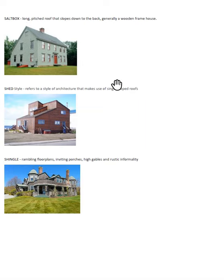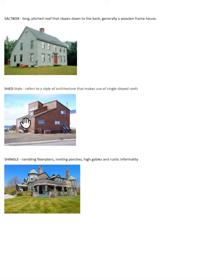Shed style homes — believe it or not, this is a shed style home. Notice how each roof only has one slant. See how this roof is combined here at this gable — one roof slanted one way, another roof slanted one way. In the shingle type of home, the thing to notice is that the exterior looks like shingles, and it typically has high gables — see the big peak in the gables here.